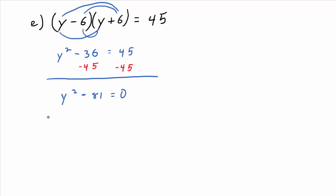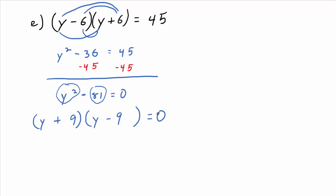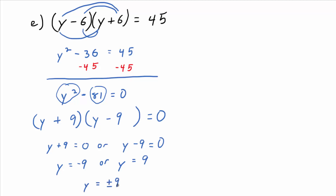We use the difference of two squares formula — (a + b)(a − b). What are you squaring to get y squared? Y. What are you squaring to get 81? 9. So the factorization is (y + 9)(y − 9) equals zero. Either y plus 9 equals zero or y minus 9 equals zero. Is there a compact way to write that? Y equals plus or minus 9.